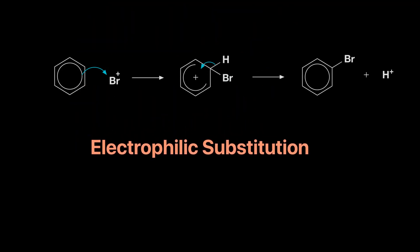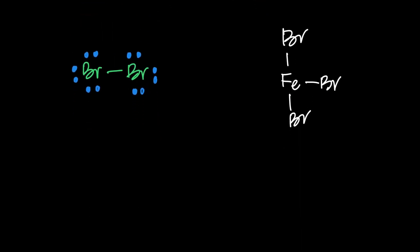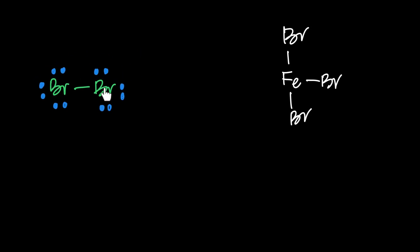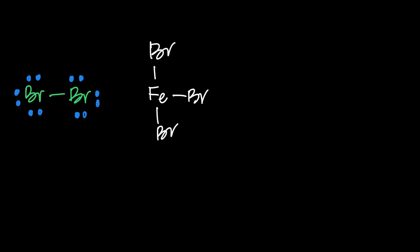Now we need to figure out how to get the electrophile, since Br+ doesn't exist naturally. We get it by reacting Br2 with FeBr3. Our job is to understand how these two react to generate Br+. FeBr3 is what we call a halogen carrier. The iron in FeBr3 is very electron-deficient and is looking for electrons. When it encounters Br2, it initiates a reaction to generate the required electrophile.